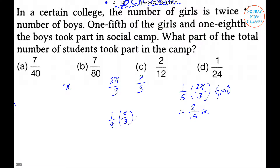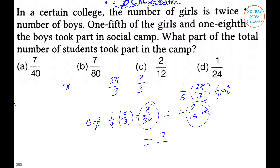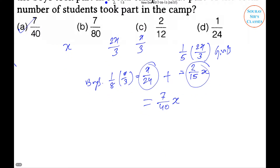Number of boys who took part in the camp equals 1/8 × x/3, which equals x/24. Therefore, total number of students who took part in the camp equals 2x/15 + x/24, which equals 7x/40. Hence 7/40 is the part of total students who took part in the camp. Option A is the right answer.